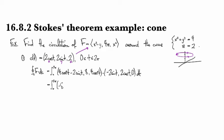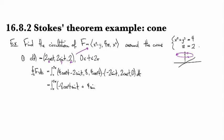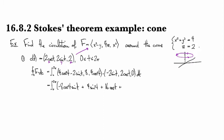So now working out the dot product, we get the integral of, let's see, -8 cosine² sine t and then plus 4 sine²t and then plus 16 cosine t and then plus 0 dt.